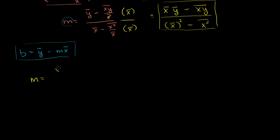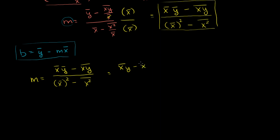The slope of that line is going to be the mean of x's times the mean of the y's, minus the mean of the xy's. Don't worry, this seems really confusing — we're going to actually do an example in a few seconds. Divided by the mean of x squared minus the mean of x, squared. You might also see this written as the mean of the xy's minus the mean of x times the mean of the y's, all over the mean of the x squareds minus the mean of the x's squared.